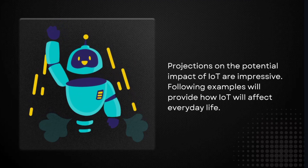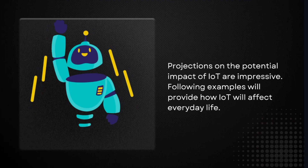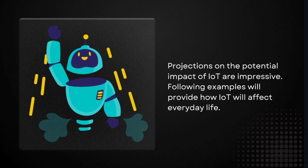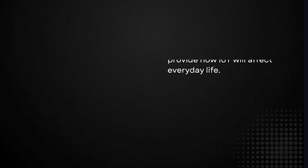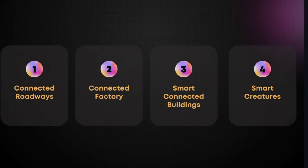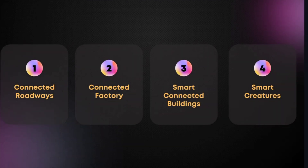We are going to talk about examples. There are 4 examples. Here are: Connected Roadways, Connected Factory, Smart Connected Buildings, and Smart Creatures.